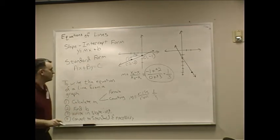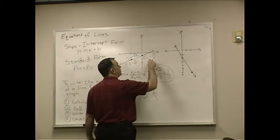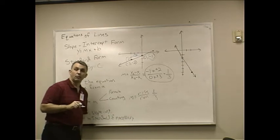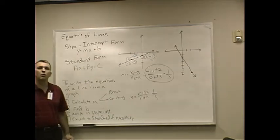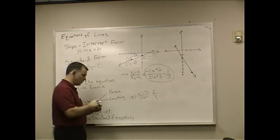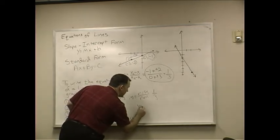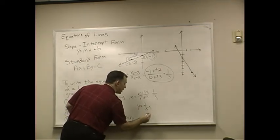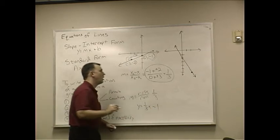Find b. Well, b is really easy to find. It's negative 1. That's where it goes through the y-axis. So, to write this equation, y equals 1 third x minus 1.